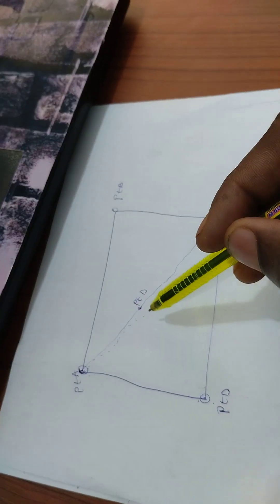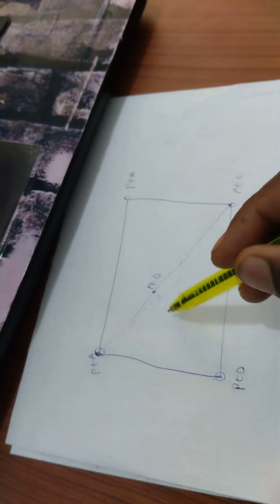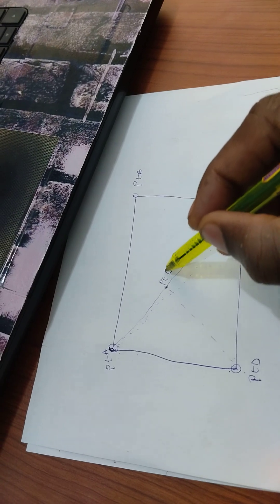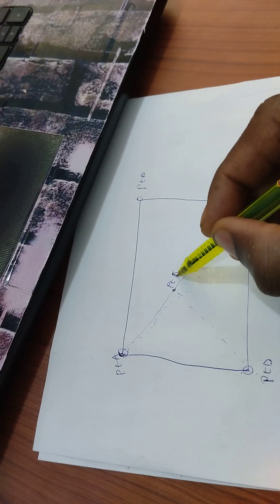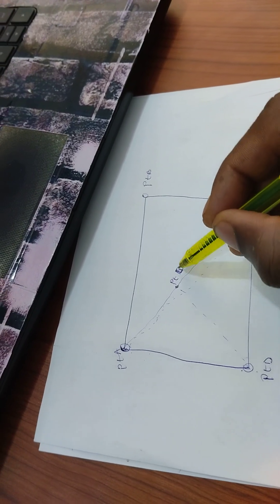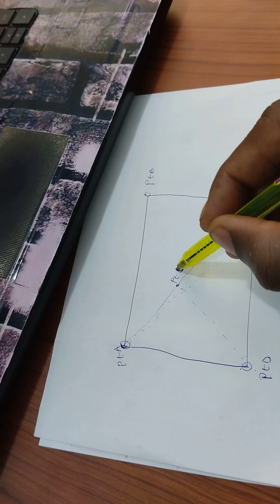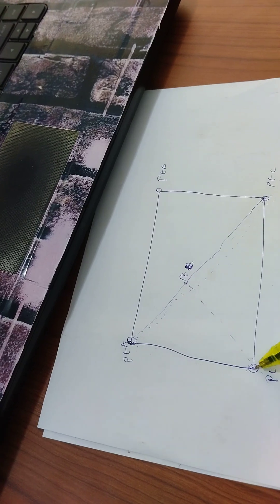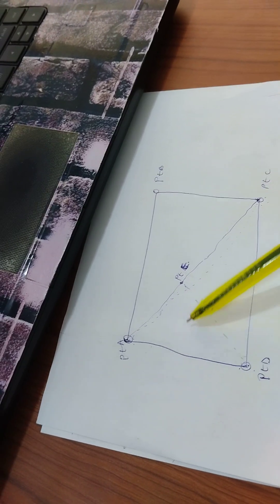That is the point E where you can take measurement from point E to D, to have another triangle. You know, to have another triangle.